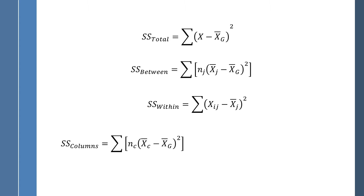For the factorial ANOVA, we have two additional formulas and another shortcut. First is the sum of squares for columns, which looks very much like the between-groups sum of squares. Do what's inside the parentheses first. Take the mean of each column — mean-sub-c represents column 1, column 2, etc. Subtract the grand mean, square that deviation score, and multiply by the number of people in that column. Then move to the next column and add them together.